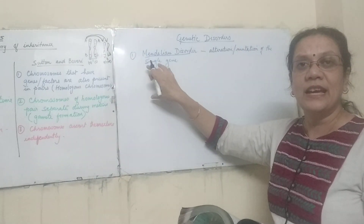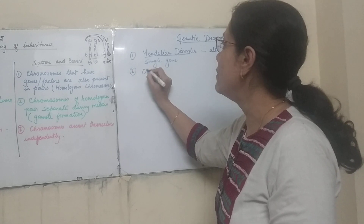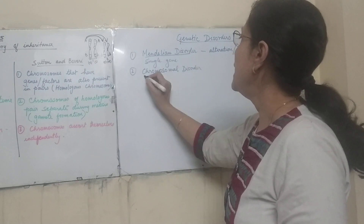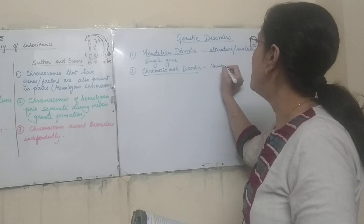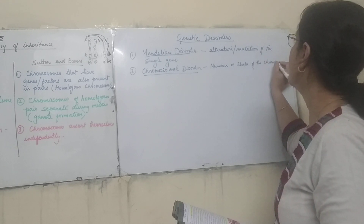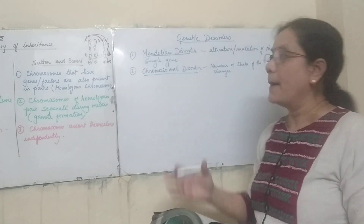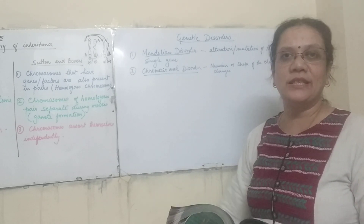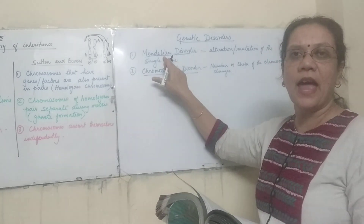These are called genetic disorders because the disorders are seen at the gene level. The other type is chromosomal disorder, where the number or shape of the chromosome changes. This also occurs due to various mutations, but chromosomal disorders do not pass down to the next generation — they are generally not occurring during meiosis, whereas genetic disorders are generally happening during meiosis.